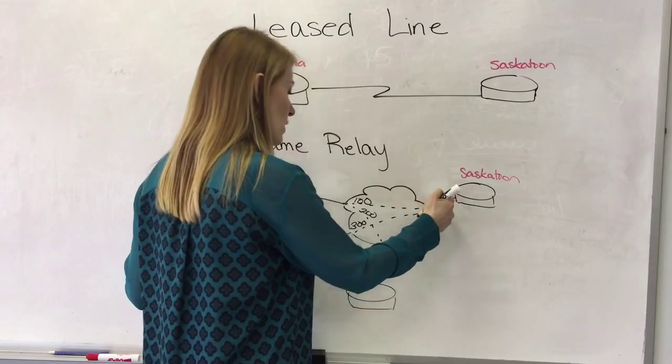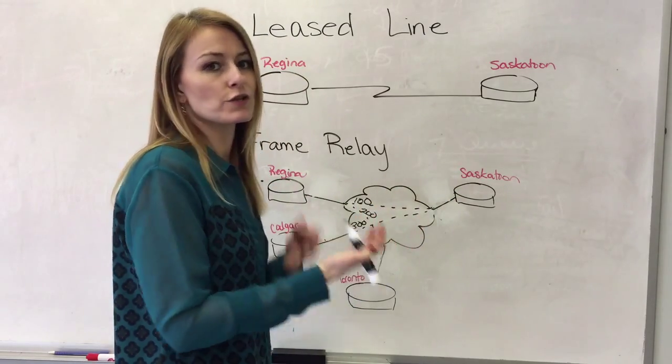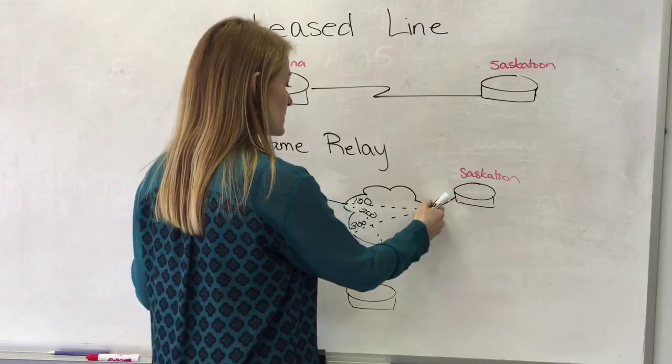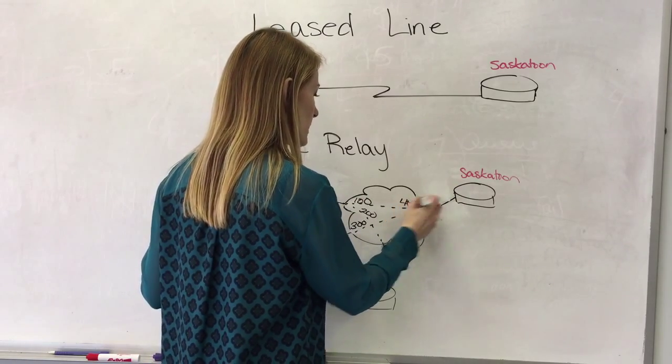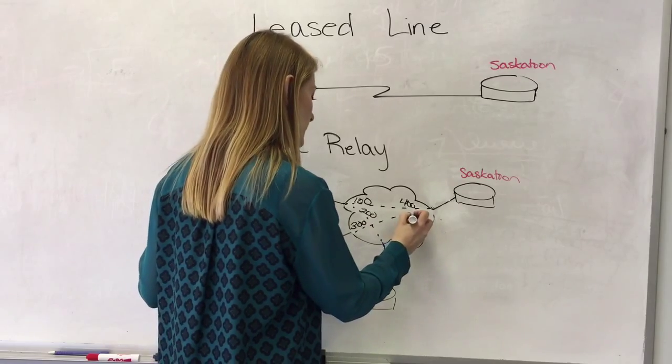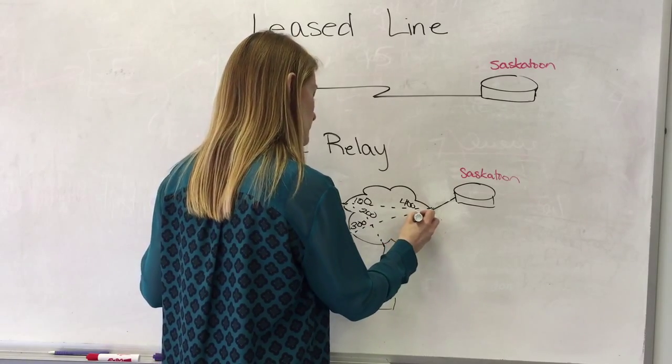And then the other end of the virtual circuit will have a different number. So maybe the Saskatoon going to Regina is 400 and the Saskatoon going to Calgary is 500.